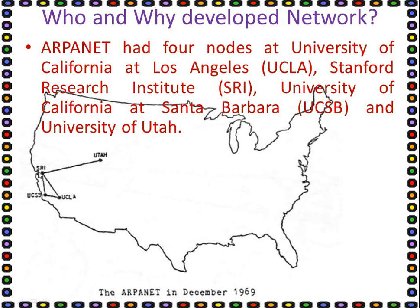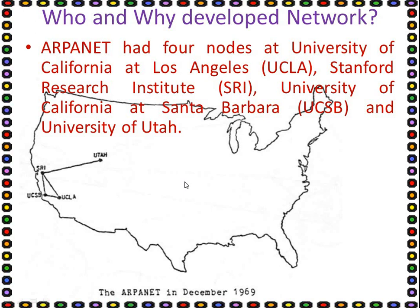The four node locations were: University of California at Los Angeles, University of California at Santa Barbara, Stanford Research Institute, and University of Utah. This first network was called ARPAnet.